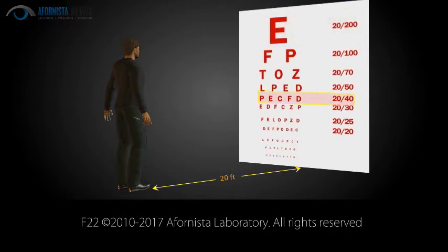If you can read this row, you have 20-40 vision. Normal sight sees at 40 feet what you see at 20 feet.